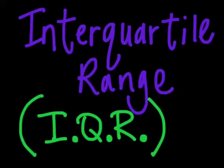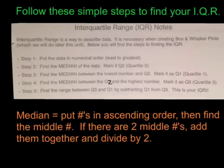If you look at your handout, it's going to tell you five steps that you need to know in order to do IQR. Here are the simple steps you need to do. If you look in step four, there was a typo. It should say find the median between Q2 and the highest number, and mark it as Q3.